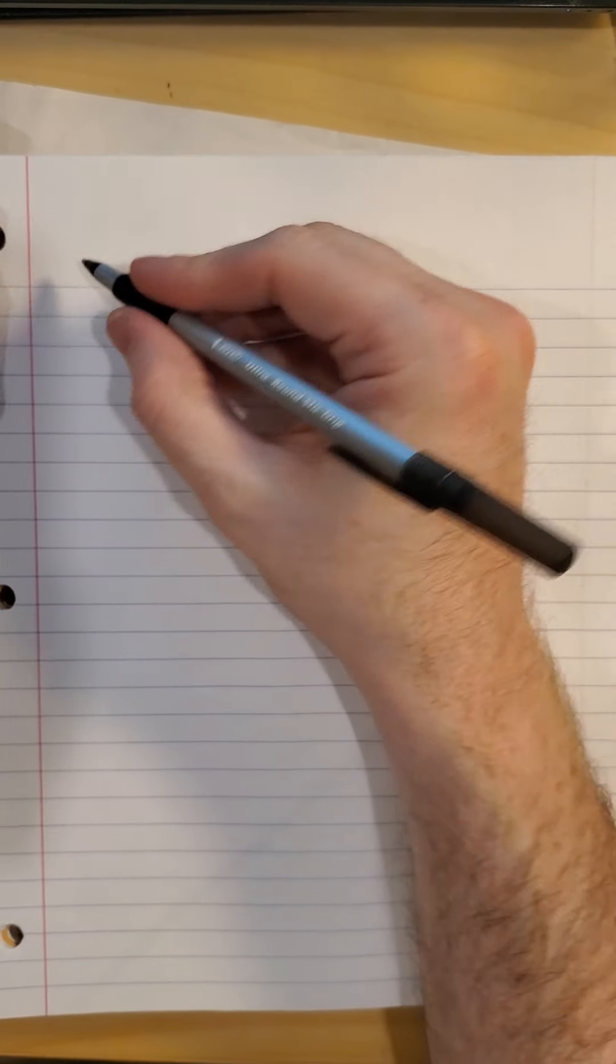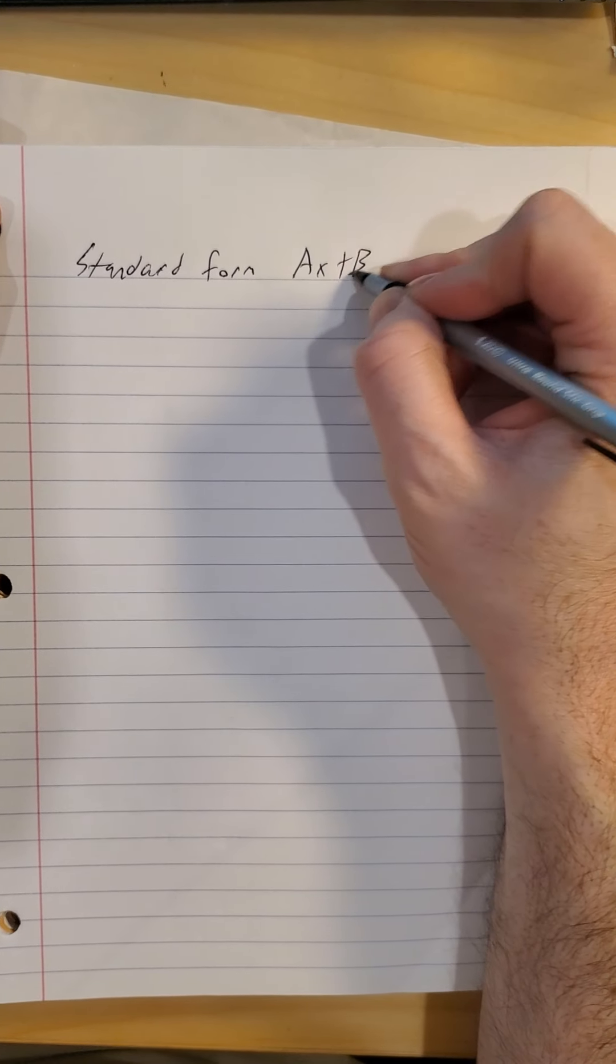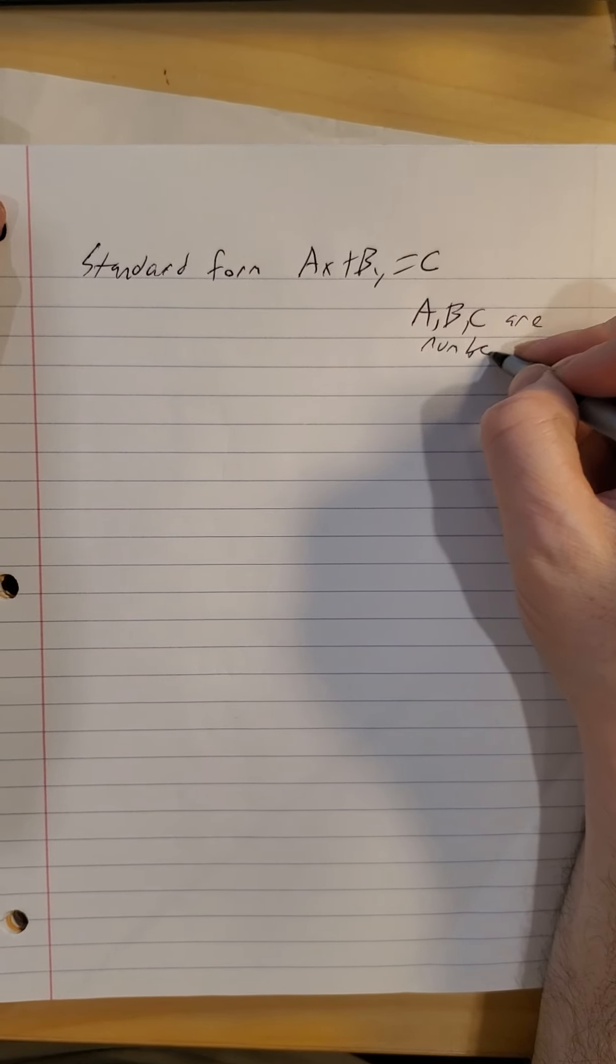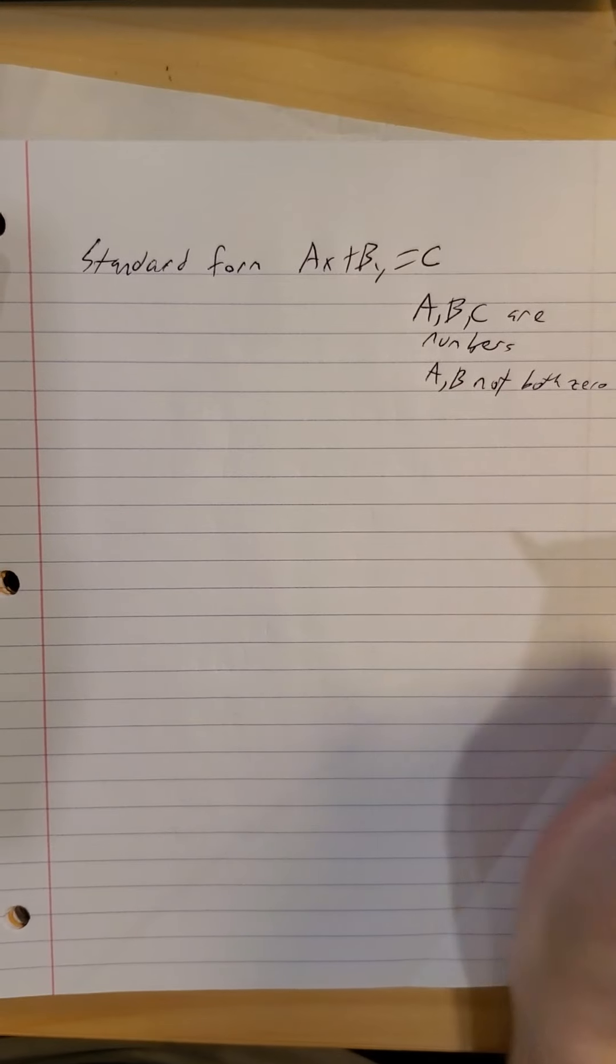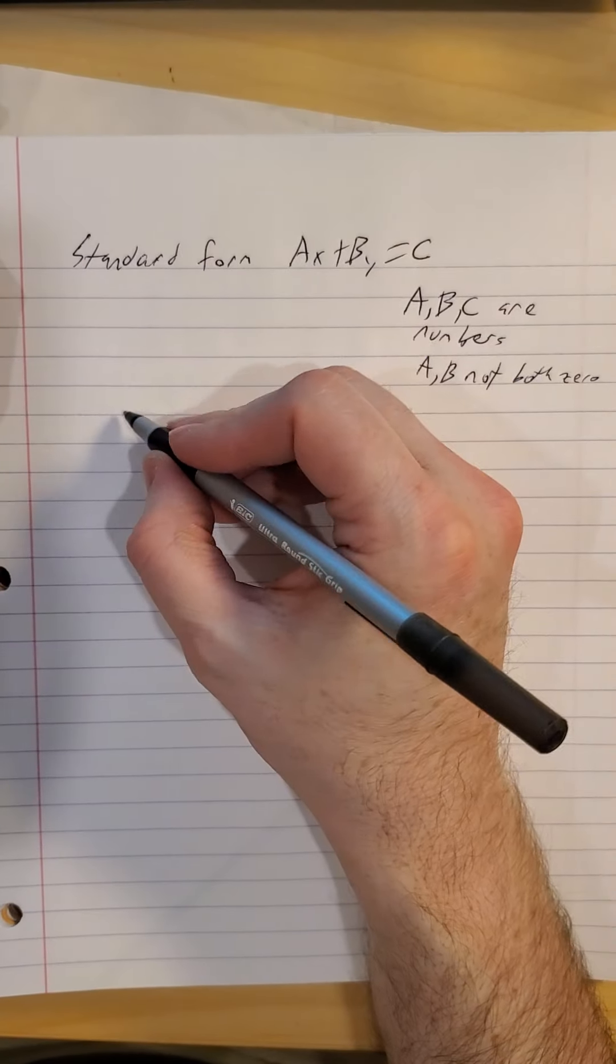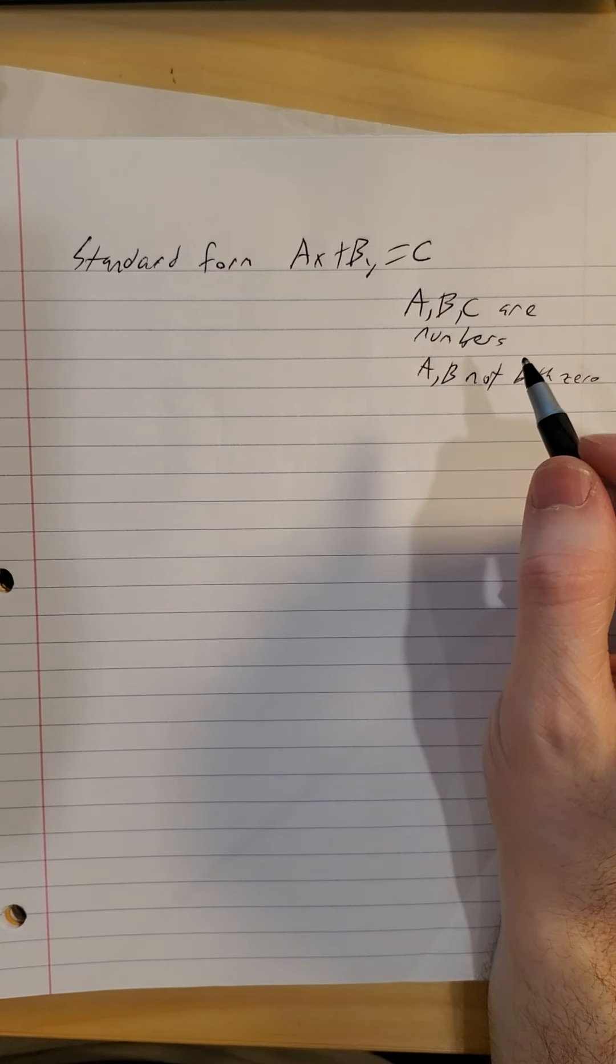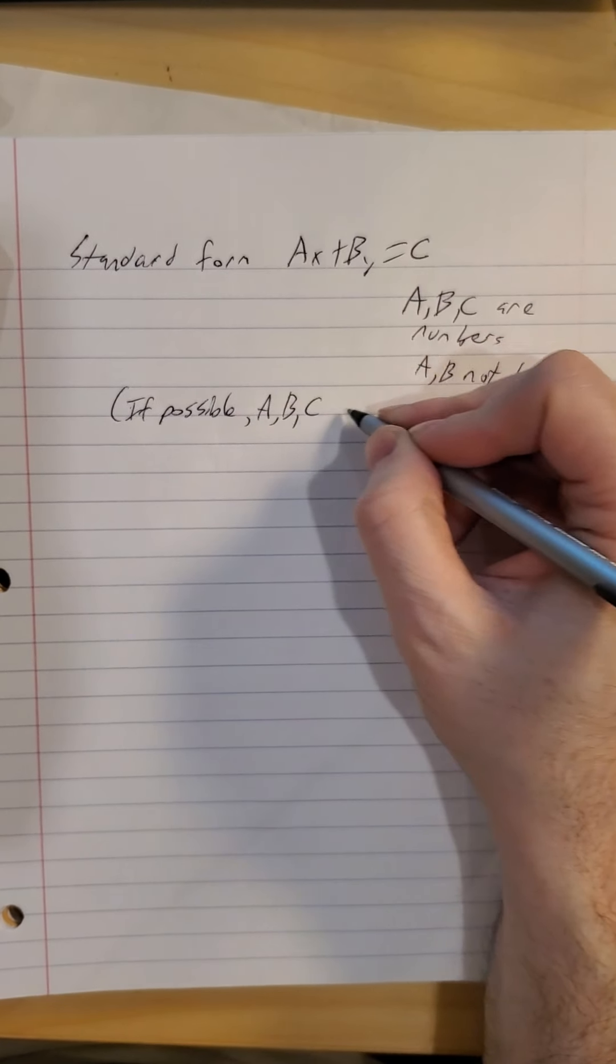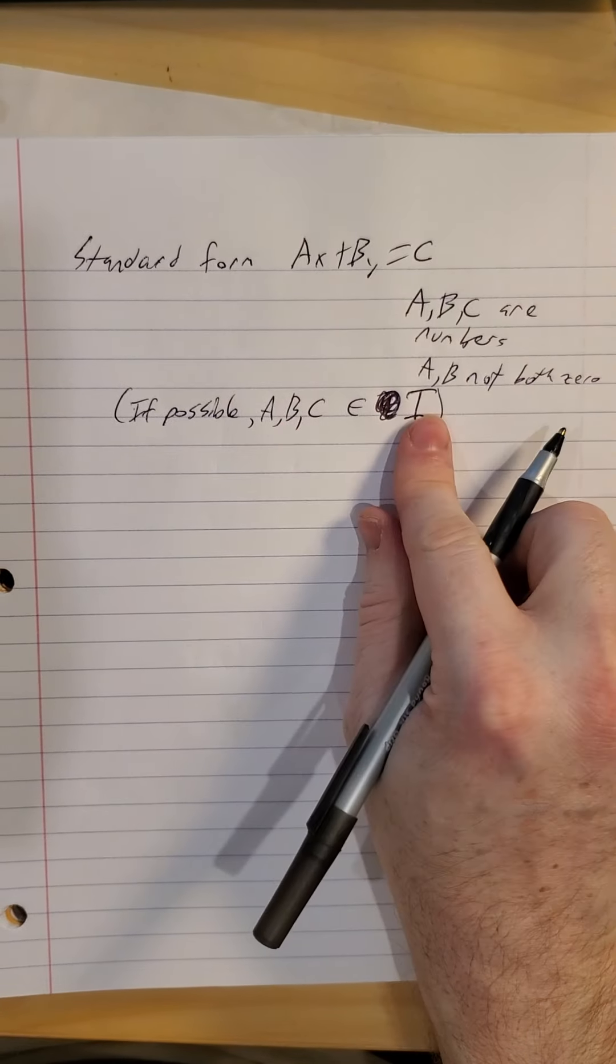And the only other version of the equation of a line that we tend to work with is what's called standard form. a times x plus b times y equals c. a, b, and c are numbers. a and b not both zero. One of them at a time is allowed to be zero. They can't be zero at the same time. So basically, you get all your variables on the one side, your constant on the other side. Generally, they also want you to get rid of fractions. So we want integers. Oh, you're used to seeing i for integers. z is the usual notation for integers.